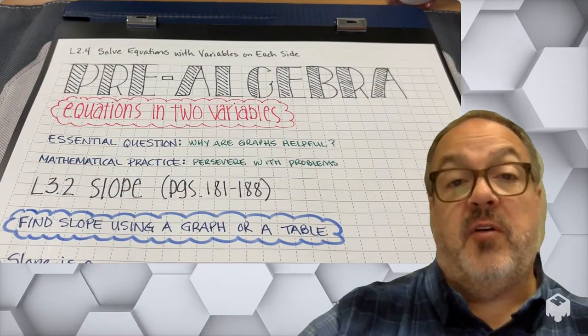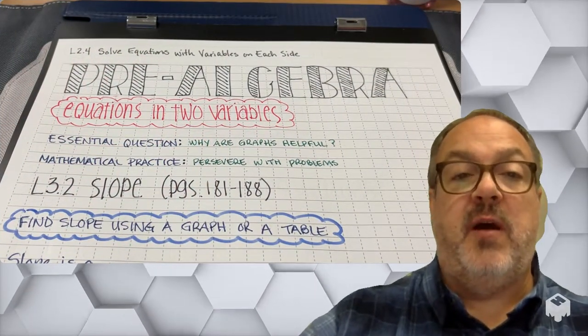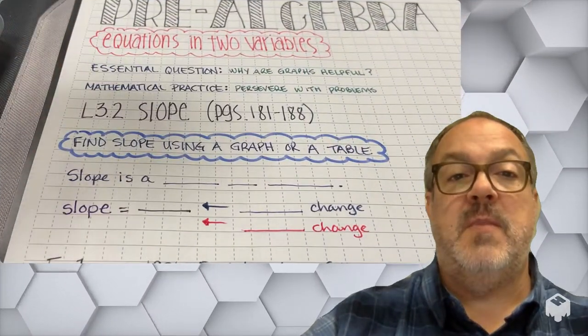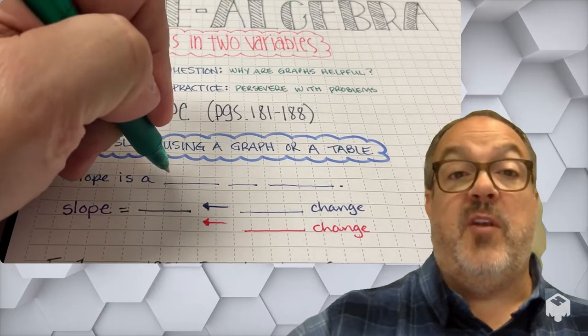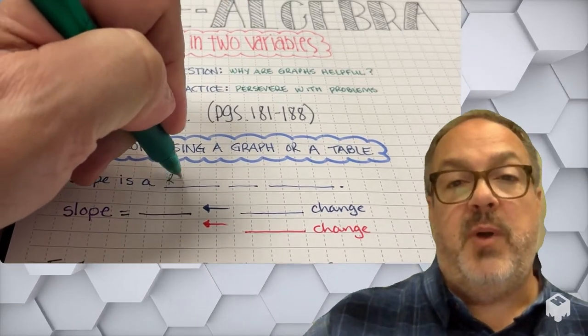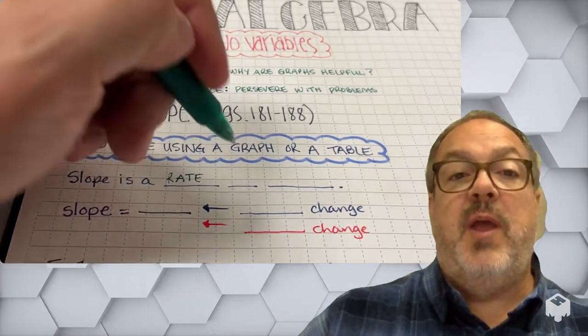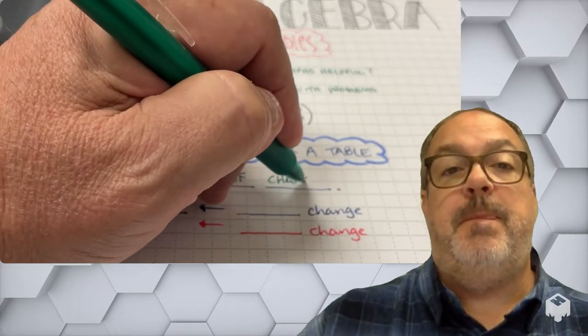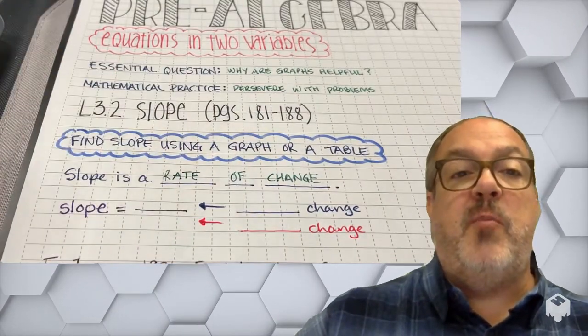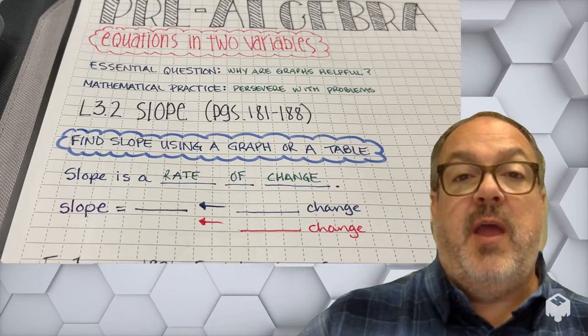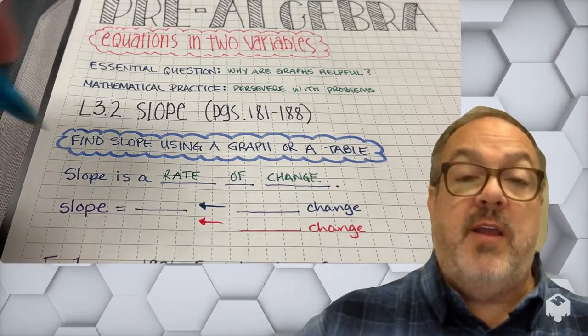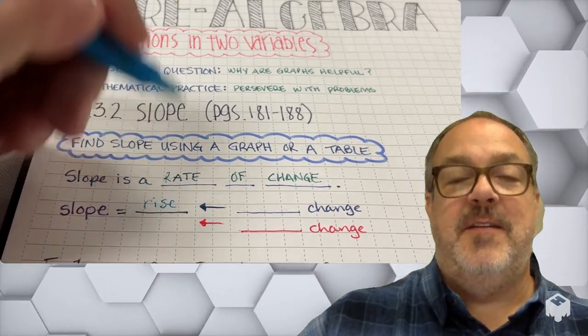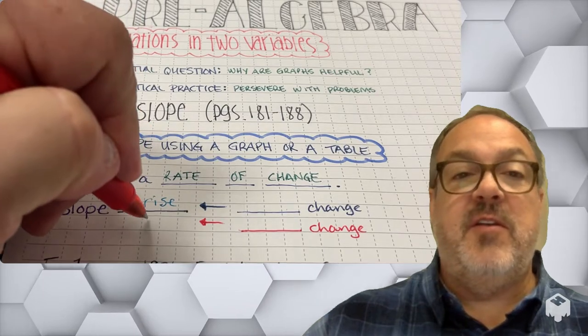Lesson 3.2 is called slope, and we're going to be working on pages 181 through 188. So in order for us to find the slope, we're going to use a graph or a table. But we need to think of slope as a rate of change.